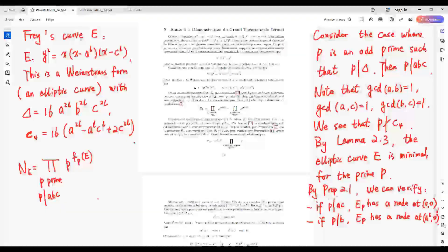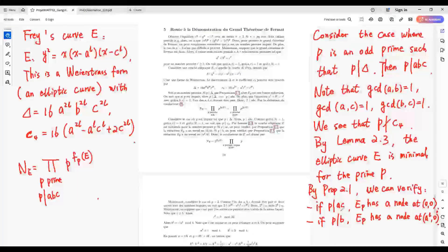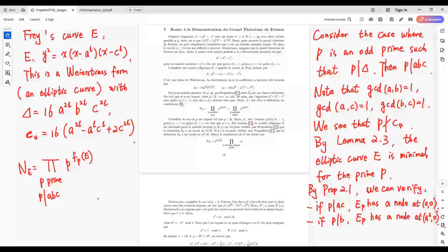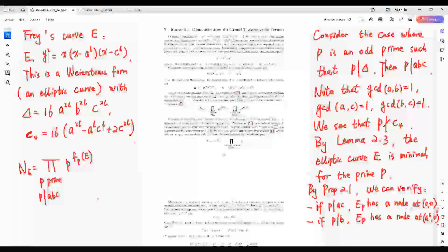By Proposition 2.1, we can verify that if A times C is divisible by P, the reduction E_P has a node at (0, 0).